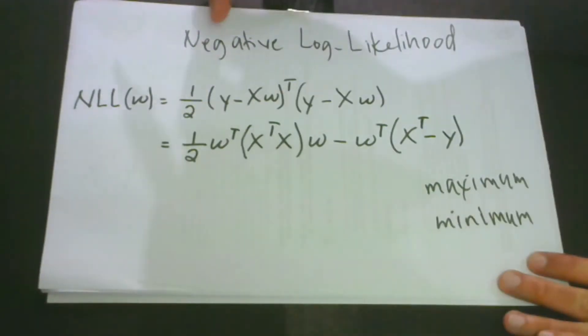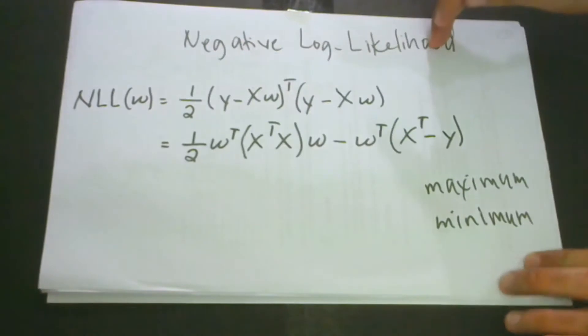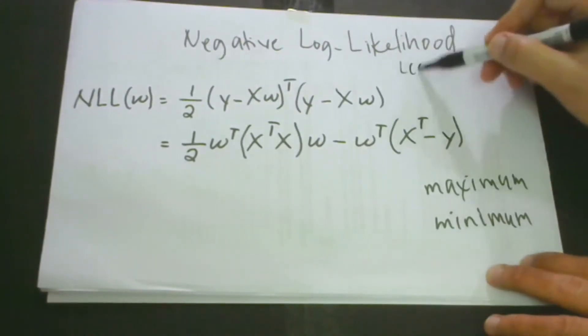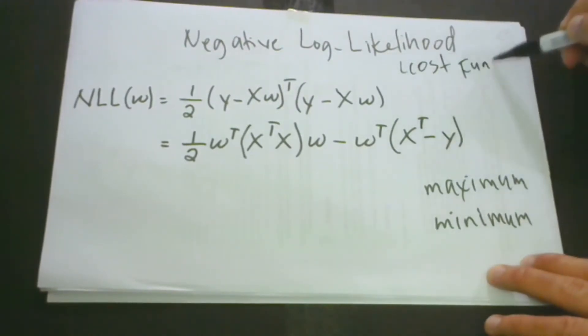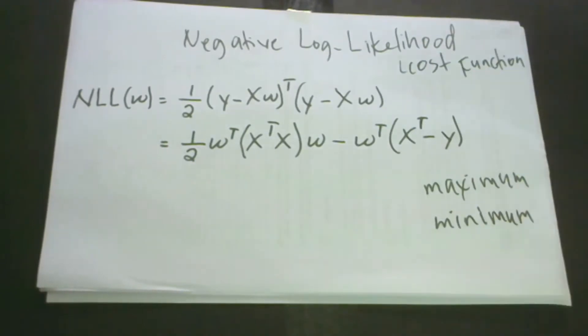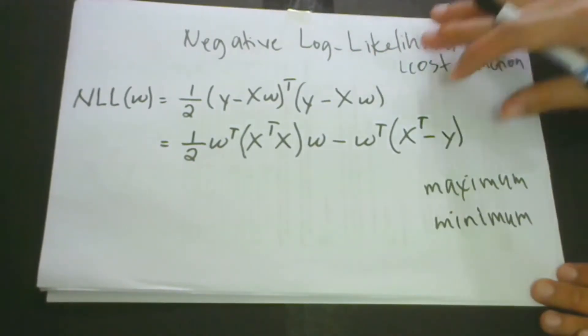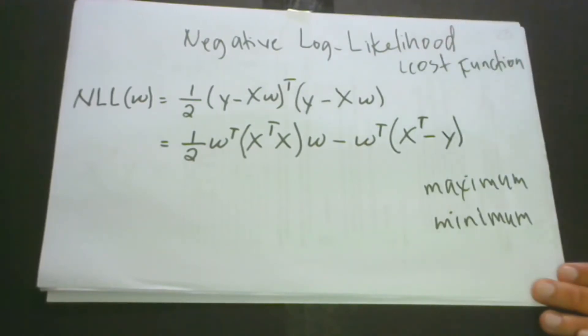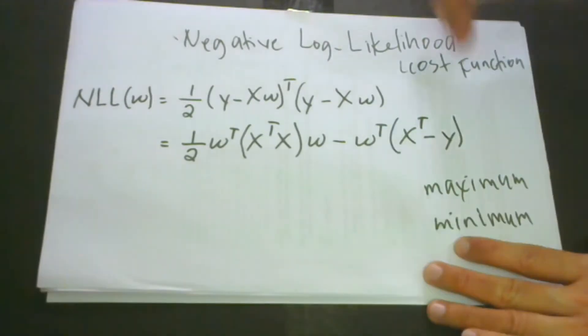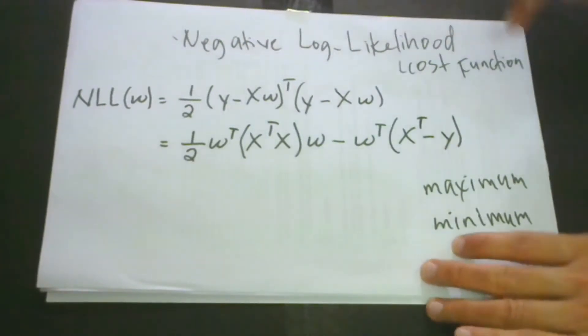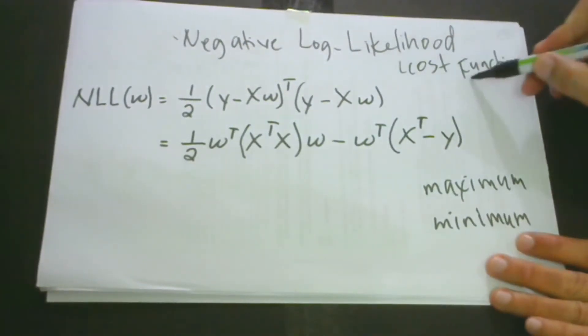When we say negative log likelihood, it is actually a cost function. When we say cost function, it is about the loss of a certain model. This tells us how bad or how good our model is performing. Because we are dealing with negative log likelihood, we always prefer to have the lower one.